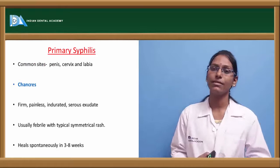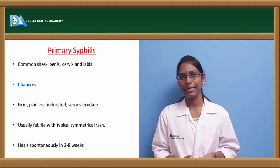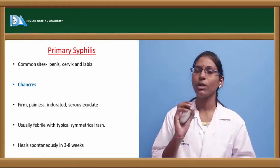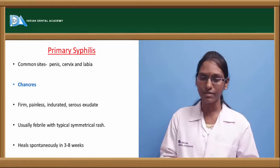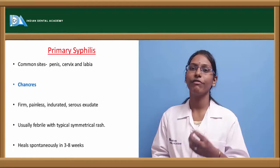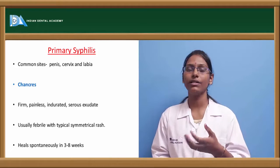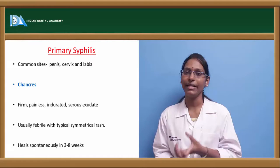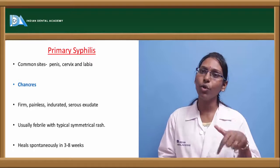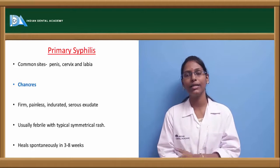Primary syphilis occurs at the site of inoculation, which can be at the glans penis, oral cavity, cervix, or labia. The pathognomonic feature of primary syphilis is chancres — flat, red, papular lesions which are firm in consistency. These are usually painless, have an indurated border, and secrete serous fluid, making them highly infectious. Chancres heal spontaneously in about 3 to 8 weeks.